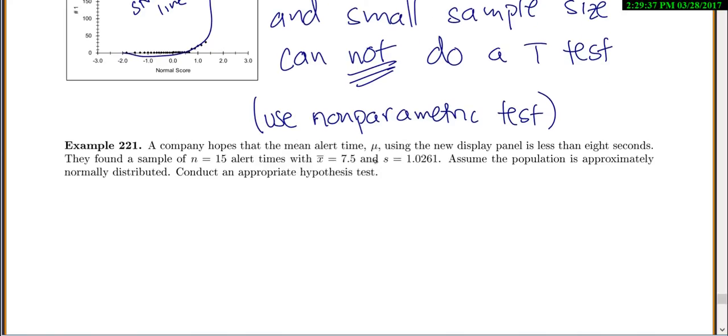Let's look at our next one then. So a company hopes that the mean alert time u using a new display panel is less than 8 seconds. They found a sample of 15 alert times. There's x bar, there's s. Notice that's a sample standard deviation s, so we know we'll use a t-test and not a z-test. Assume the population is approximately normal, conduct an appropriate test.